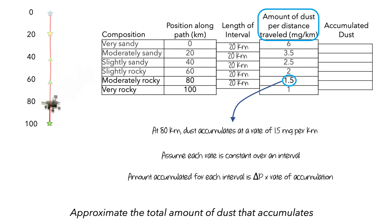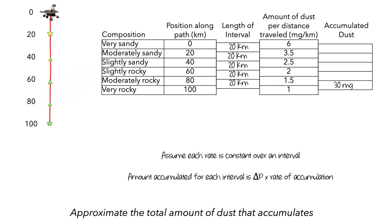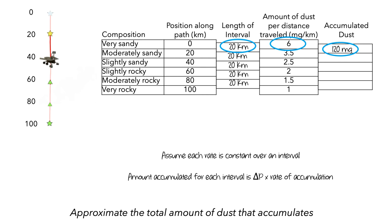For example, over the interval from 80 to 100 kilometers, the rover travels 20 kilometers. If we assume dust accumulates at a rate of 1.5 milligrams per kilometer for the entire 20 kilometer interval, then the rover would accumulate 30 milligrams of dust over that interval. Starting from the beginning of the rover's trip: over the first interval, the rover travels 20 kilometers at an accumulation rate of 6 milligrams per kilometer, giving 120 milligrams of dust. Then over the next interval, 20 kilometers multiplied by 3.5 milligrams per kilometer gives 70 milligrams of dust.